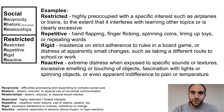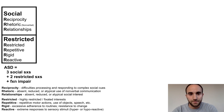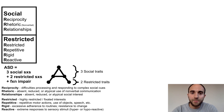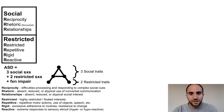Each of these symptoms uses R words to make them easier to remember. To meet criteria for the diagnosis of ASD, a patient must have all three of the social symptoms and at least two of the restricted symptoms associated with functional impairment. To remember this, you can visualize the A in autism, where the three points in the triangle at the top represent the social symptoms, and the two points on the legs at the bottom represent the restricted symptoms.